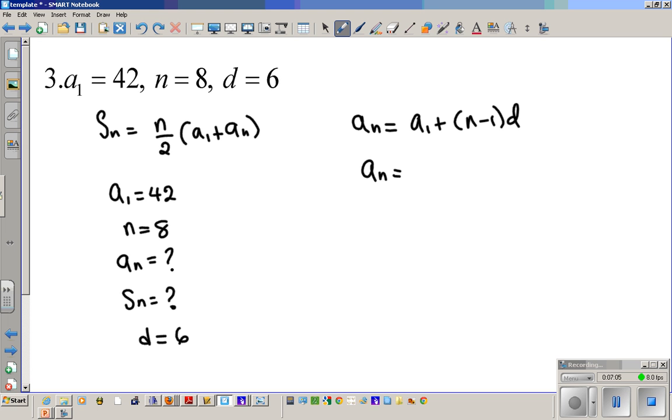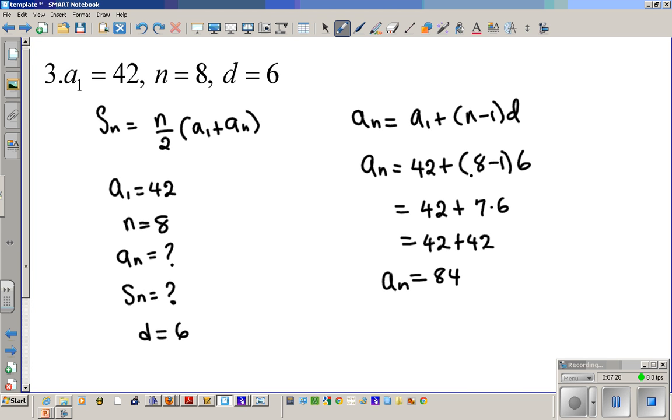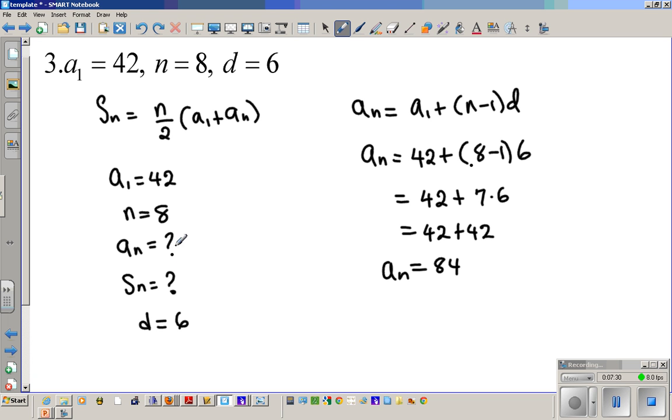Let's plug in this information here, and then see if we can find what AN is to find the sum. We have AN equals A1, which is 42, plus N, N is 8, 8 minus 1 times the common difference, which is 6. So we have 42 plus 7 times 6, which is going to yield 42 plus 42. And AN is now going to be 84. So AN is 84. Now we have AN, now we can plug it in here.